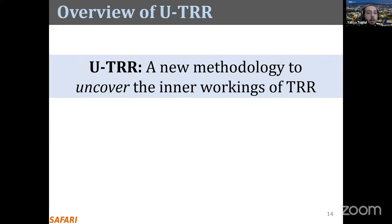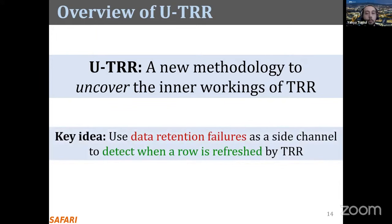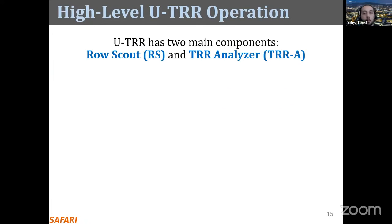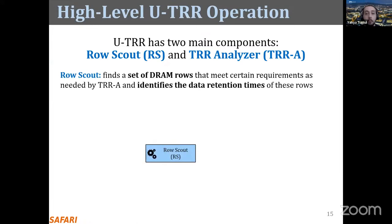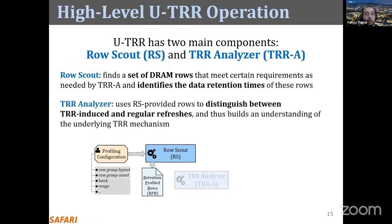We proposed UTR, a new methodology to uncover the inner workings of TRR mechanisms. The key idea of UTR is to use data retention failures as a side channel to detect when a certain row is refreshed by TRR mechanisms. UTR consists of two main components: row scout and TRR analyzer. Row scout finds a set of DRAM rows that meet certain requirements, identifies their data retention times, and the TRR analyzer uses those rows to distinguish between TRR-induced and regular refresh operations, building an understanding of the underlying DRAM mechanism.